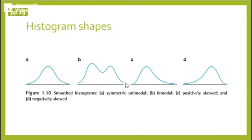If a histogram has more than two peaks we can call that multimodal. A histogram that is stretched out on the right is called positively skewed and a histogram that is stretched out on the left is negatively skewed.